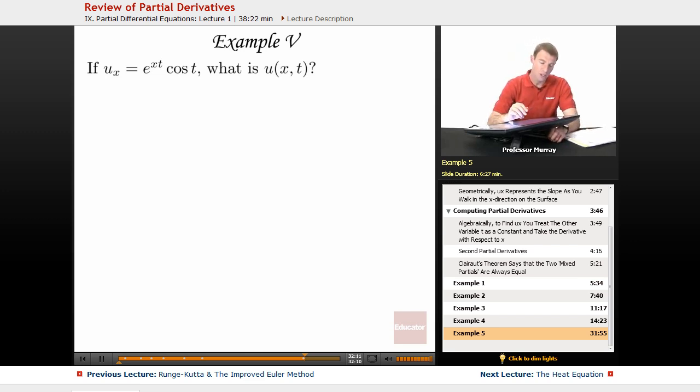So essentially what we're going to do is integrate with respect to x. So I'm going to integrate, the integral of e to the xt cosine t dx. But now that means we're integrating with respect to x, so t is a constant. It's just like when we took the derivative with respect to x, we held t as constant.